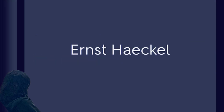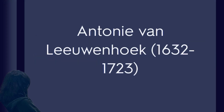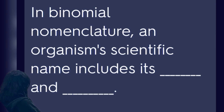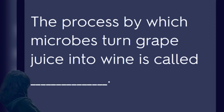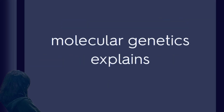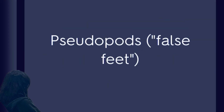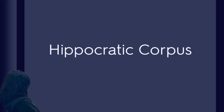Ernst Haeckel. Antony van Leeuwenhoek. In binomial nomenclature, an organism's scientific name includes its blank and blank. Proteology. The process by which microbes turn grape juice into wine is called blank. Molecular genetics explains. Pseudopods. Hippocratic corpus. Algae.